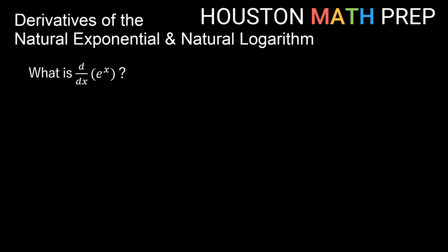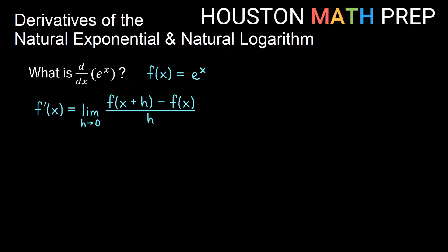We'll start with the natural exponential function e to the x. If we want to figure out what the derivative of e to the x is with respect to x — in other words if our f of x is e to the x, what is f prime of x? For this one we'll look at the limit definition. So remember the formula for f prime of x is the limit as h approaches 0 of f of x plus h minus f of x, all over h. So if I take e to the x as my f of x and plug that into my limit definition, I get the limit as h approaches 0 of e to the x plus h minus e to the x, all over h.